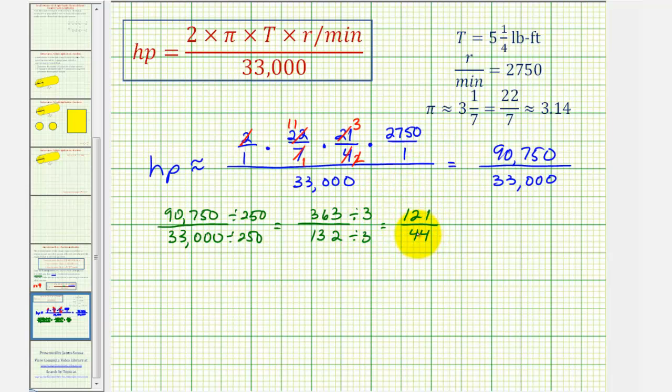And now notice they're both divisible by 11. So we have 11 fourths for the horsepower. So the approximation for the horsepower is 11 fourths. Let's also write this as a mixed number. So 11 divided by four. There are two fours in 11, two times four is eight, we have a remainder of three. So we can also say the horsepower is two and three fourths. And three divided by four is .75, so we can also say the horsepower is 2.75.